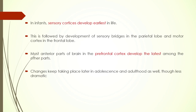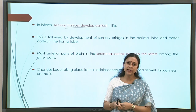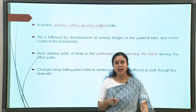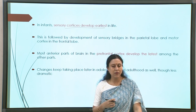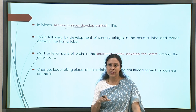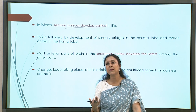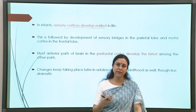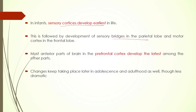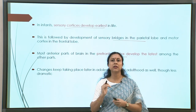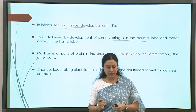This was proposed by Best in 1988, but current techniques also confirm this kind of trajectory. For infants, sensory cortices develop the earliest. When a small child is trying to interact and negotiate with the world — crawling around and touching everything — this is the sensory motor stage of the child's development. Hence the sensory motor map in the brain also develops in the very beginning, followed by the development of sensory bridges in the parietal lobe. The most anterior part of the brain, the prefrontal cortex, develops the latest.